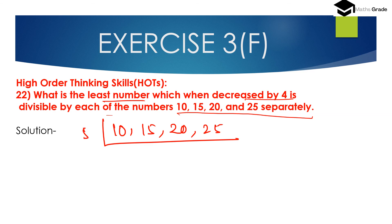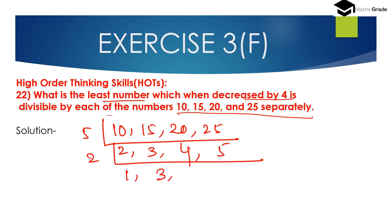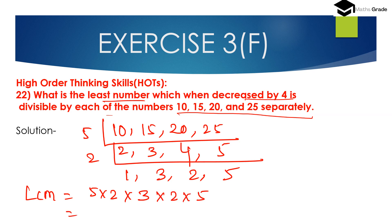Computing LCM of 10, 15, 20 and 25: the LCM is 5 multiplied by 2, multiplied by 3, multiplied by 2, multiplied by 5. That gives 5 times 2 is 10, times 3 is 30, times 2 is 60, times 5 is 300. So the LCM of 10, 15, 20 and 25 is 300.